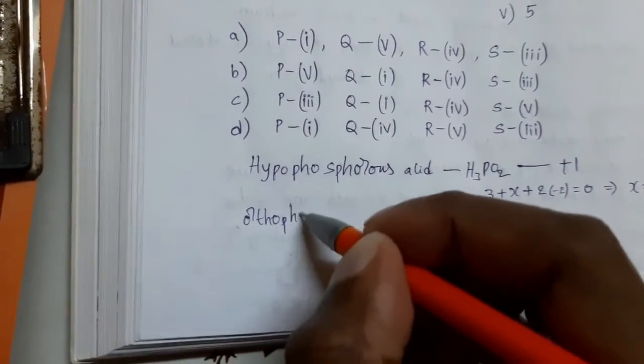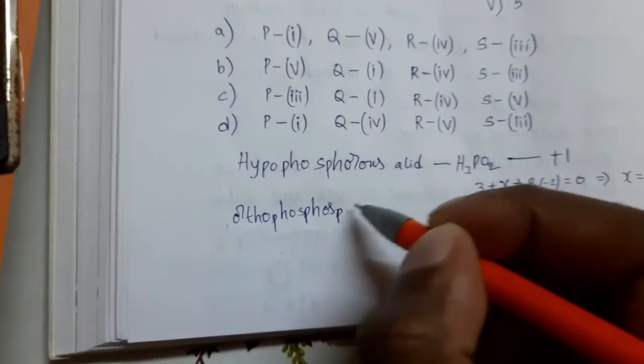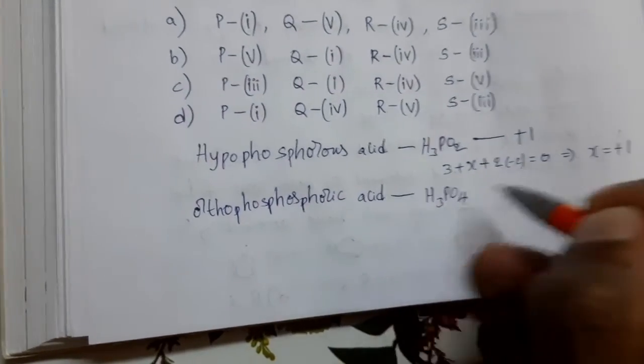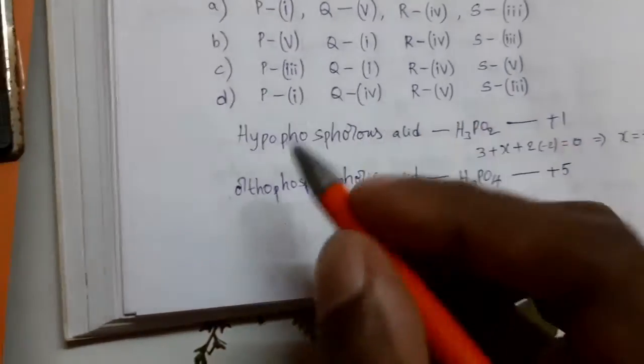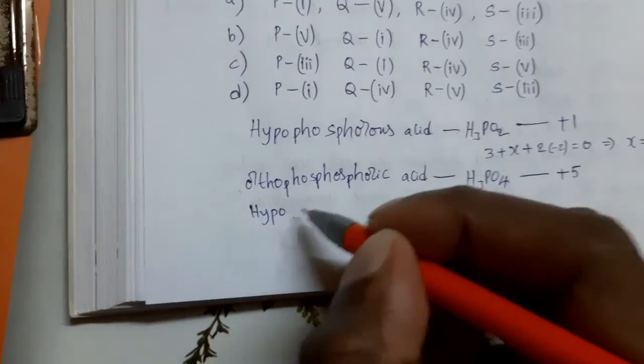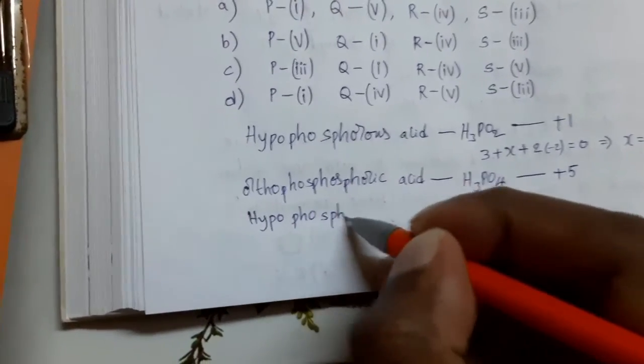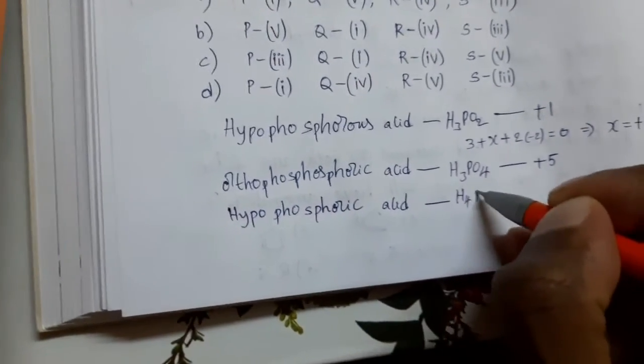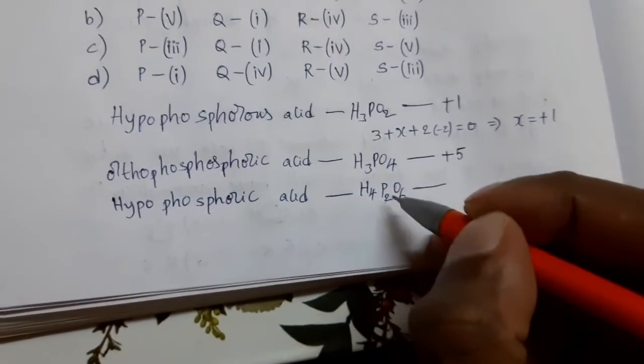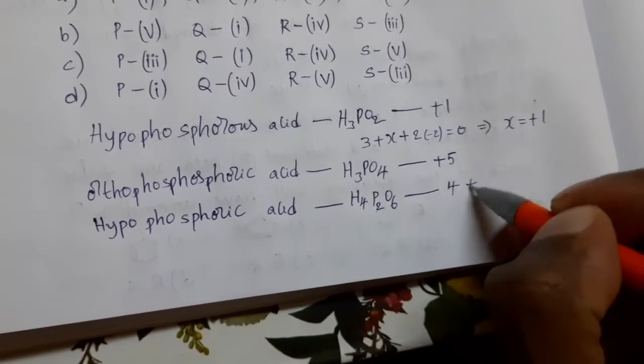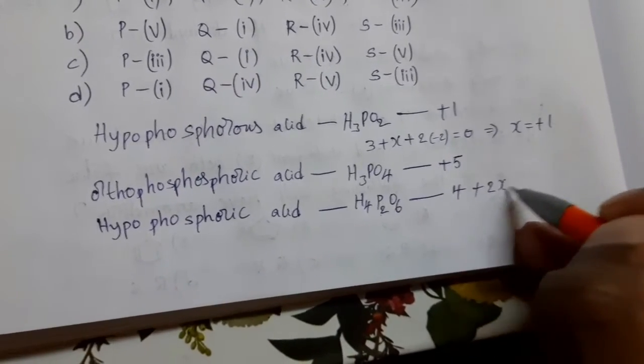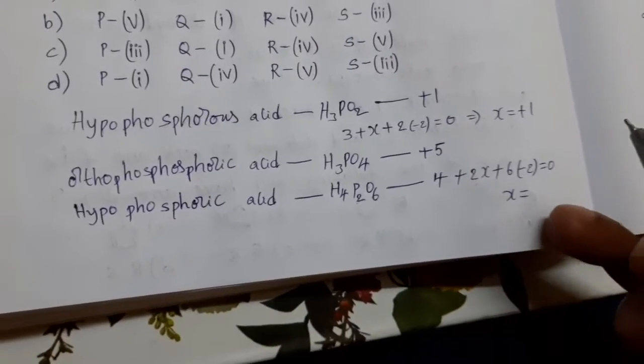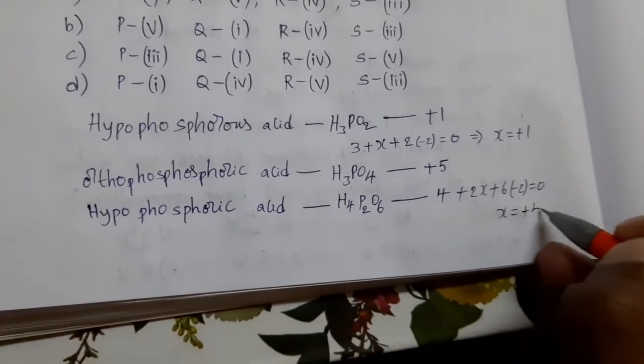Next, hypophosphoric acid. Its formula is H4P2O6. Find out oxidation state. For hydrogen 4, 2 phosphorous atoms, so we have to consider 2x plus 6 into minus 2, that equals 0. X equals how much? Plus 4.